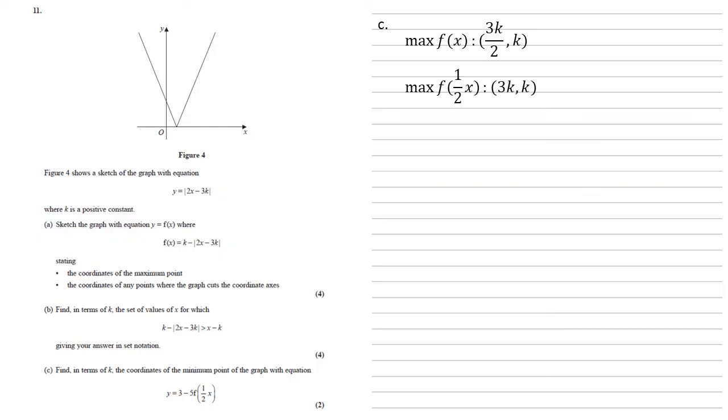So the max of f half x is going to be twice the x coordinate, so 3k and the y is still going to be k. Now the minimum of our y is going to be 3 minus 5 lots of the maximum of f. So the y coordinate is going to be 3 minus 5k. The x that's going to go with this is going to be the same x that gives us the minimum of y. So that's 3k. So our coordinate of the minimum point is 3k, 3 minus 5k.